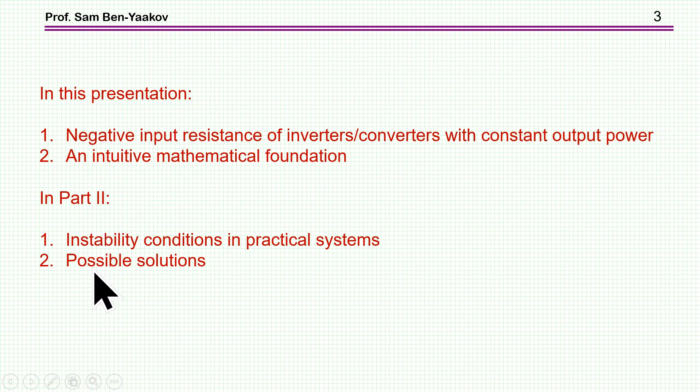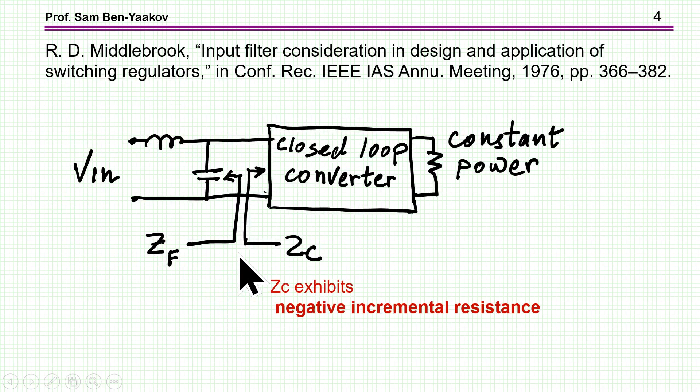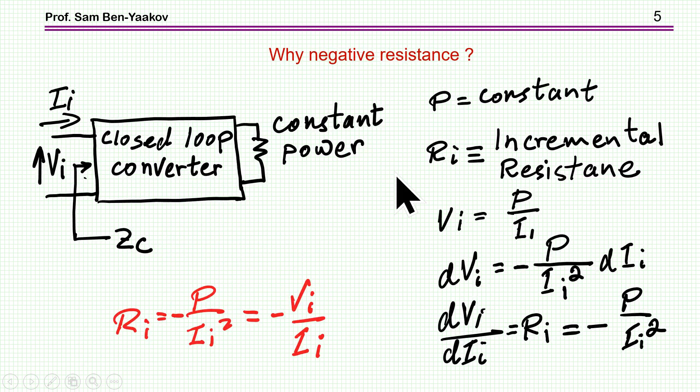In part two, I'm going to discuss the instability in some practical systems to show actual examples, and then to point to possible solutions to the problem of instability. So let me first discuss the question of negative input resistance to inverters and converters, incremental resistance, which was pointed out and discussed first by Professor Middlebrook. Many consider him as the father of modern power electronics. And in this paper, Input Filter Consideration in the Design and Application of Switching Regulators of 1976, he discussed the issue of negative input resistance.